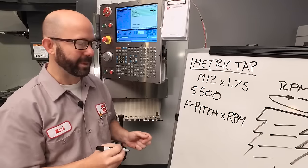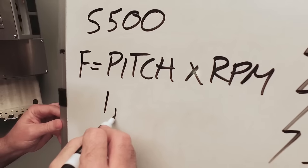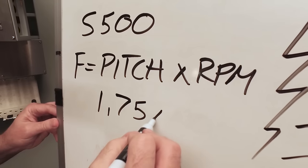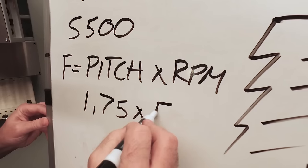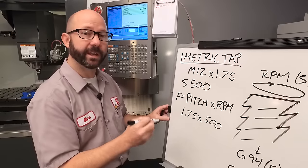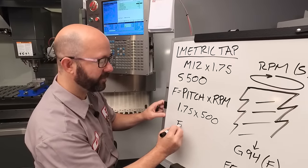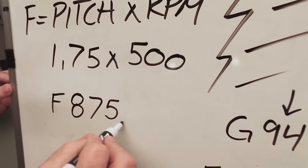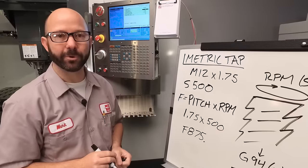Let's go ahead and fill in the formula. Pitch, 1.75 times RPM, which is 500. When we run that through a calculator, we're going to get a feed rate of F875.